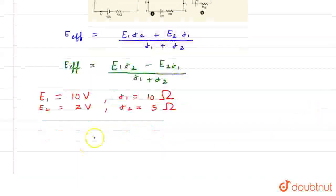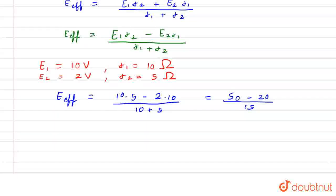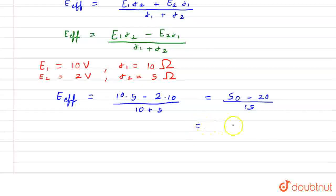So, now by putting these values we get E effective equals 10 times 5 minus 2 times 10 divided by 10 plus 5, which equals 50 minus 20 divided by 15, which equals 30 divided by 15. So, by simplifying we get E effective equals 2V.